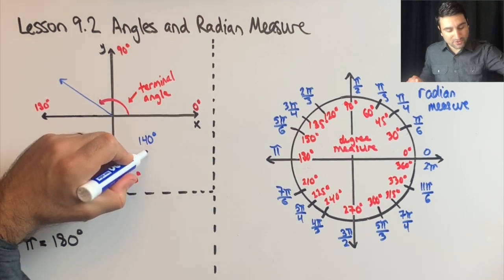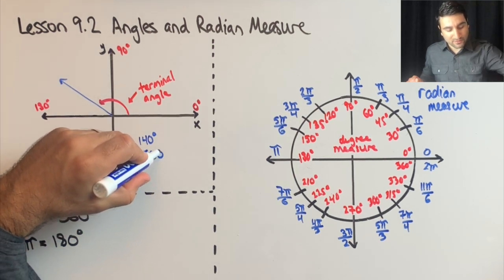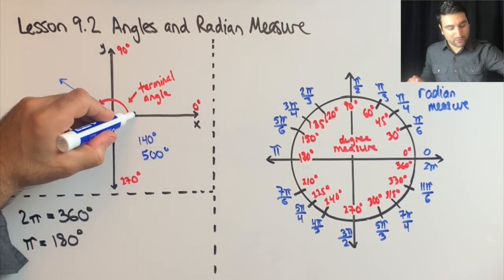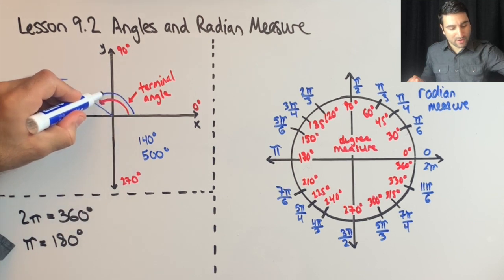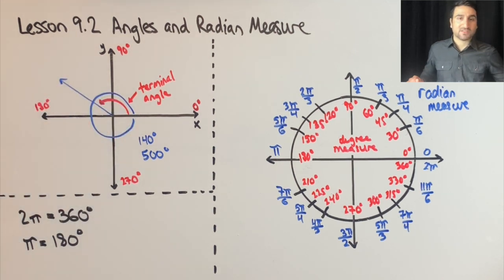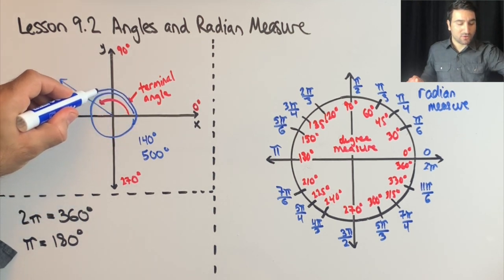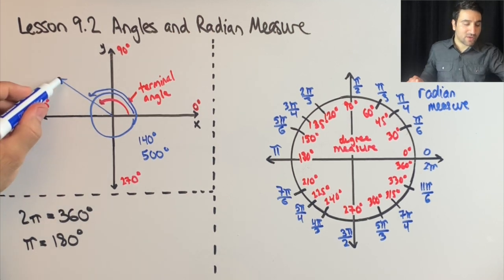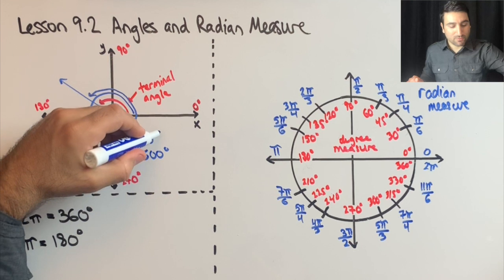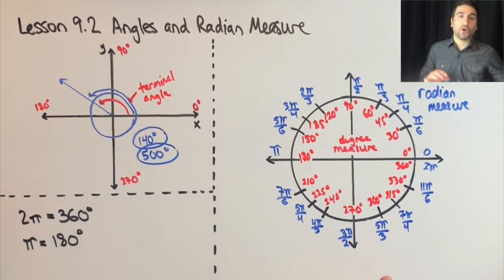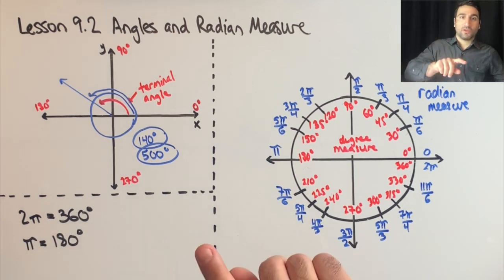You would first start going all the way around the circle, 360 degrees, plus another 140 degrees. And you see, you end up at the same line. So both 140 degrees and 500 are coterminal to each other. They produce the same terminal angle after you're done with the degree measure.